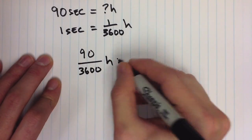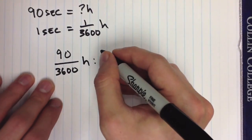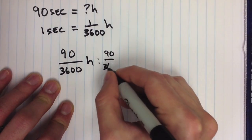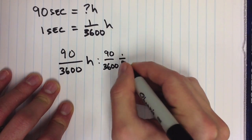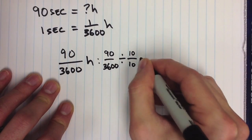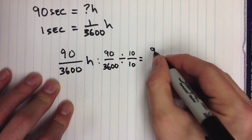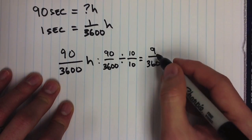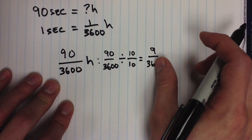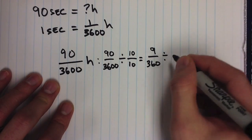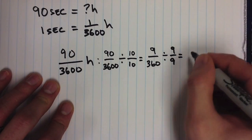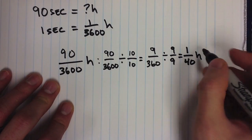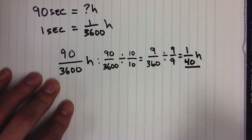We can simplify 90/3600 by dividing both by 10, giving us 9/360. Then, dividing both by 9 gives us 1/40. So 90 seconds is equal to 1/40 of an hour.